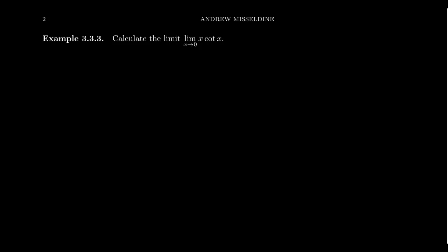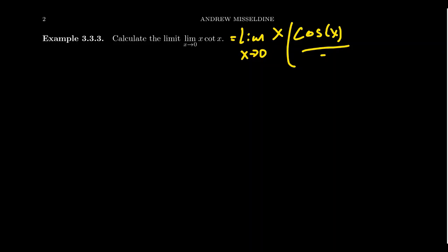Let's look at two examples. What if we want to calculate the limit as x approaches 0 of x times cotangent of x? In its current form it might not be obvious what to do, but we can use trigonometric identities. Cotangent is 1 over tangent, that is, it's cosine over sine. If we try to plug in x equals 0, we'd get 0 in the numerator — 0 times 1 — but then sine is 0 on the bottom, making this an indeterminate form we have to somehow remove.